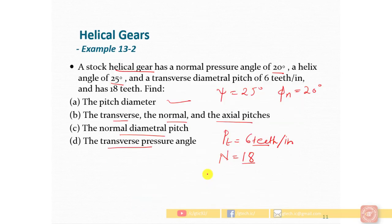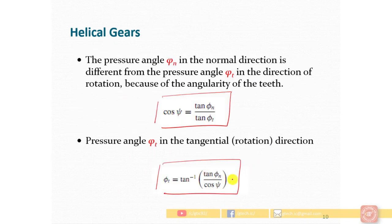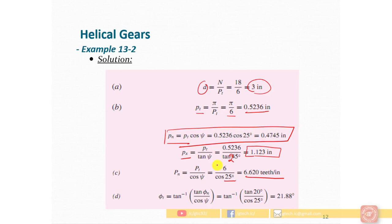Next, the transverse pressure angle φT. This equals tan inverse of tan of the normal pressure angle divided by cos of the helix angle. The transverse pressure angle is 21.88 degrees.